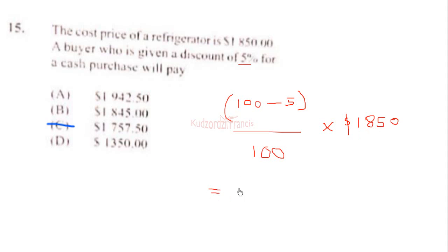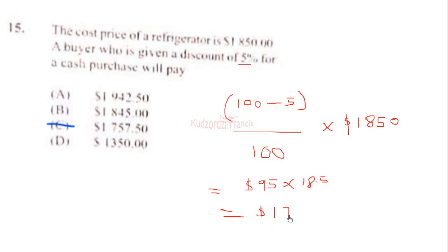This will be equal to 95 times 18.5 — moving the decimal point back — which equals 1757.50 dollars. The correct answer is C.